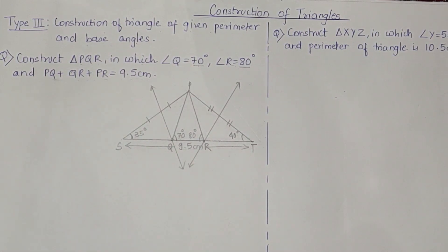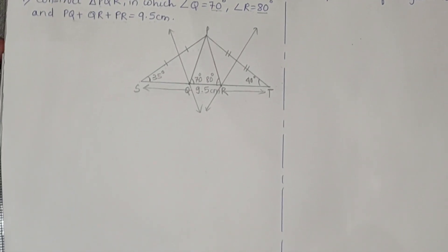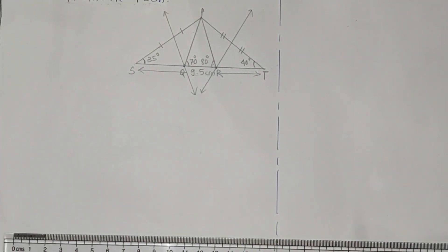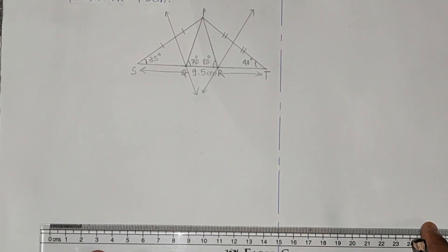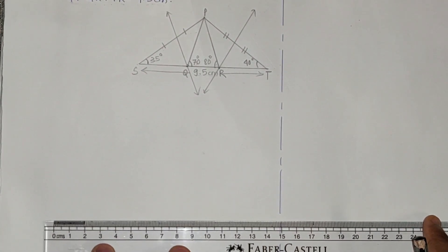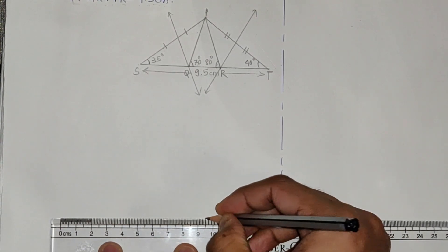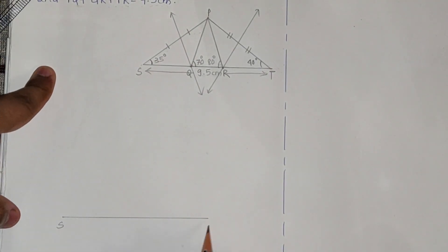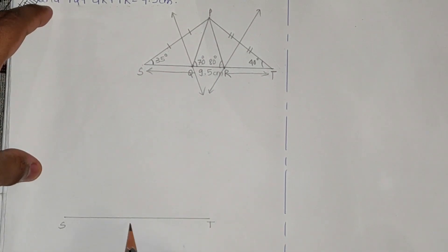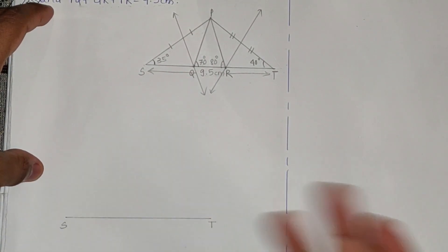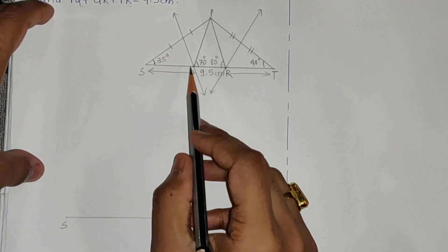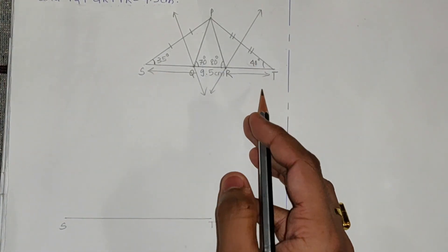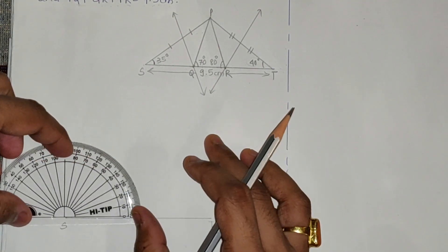Now we will start constructing the triangle. First, take the perimeter of 9.5 cm. I'll draw a line segment of 9.5 cm — this is S and this is T. We cannot get 70° or 80° directly, so we need to construct 35° and 40°. Take the help of the protractor.